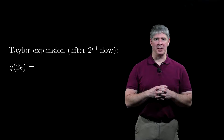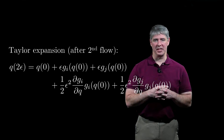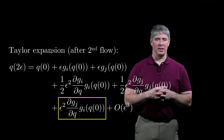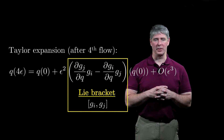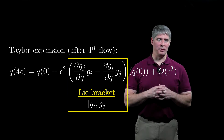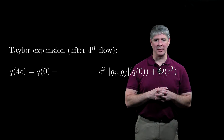After the second flow, the configuration is the zeroth order term, plus two first order terms in gi and gj, plus two second order terms in gi and gj, plus one more second order term: epsilon squared times dgj/dq times gi. Unlike the previous terms, this term depends on the order the vector fields are applied. If we continue the Taylor expansion, after the fourth flow the first order terms have cancelled, and we are left only with a second order term called the Lie bracket of the vector fields gi and gj, written as [gi, gj]. The Lie bracket of two vector fields is itself a vector field, expressing the approximate motion obtained by switching between the vector fields. Using the Lie bracket notation, we can write the net motion as epsilon squared times the Lie bracket.